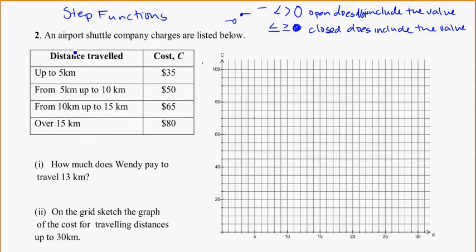Okay, so an airport shuttle company charges, the charges are listed below. And we see that up to 5 kilometers, the cost is $35. So, if I'm going to think about that, it means up to 5 kilometers here on the x-axis. I'm going to have a cost of $35. So let's figure out where that would be. It kind of looks like this is going up in 5, so let's double check it. 5, 10, 15, 20, yep. 25, 30, 35. So there's 35. And we're saying up to 5 kilometers. So that's 5 kilometers here.